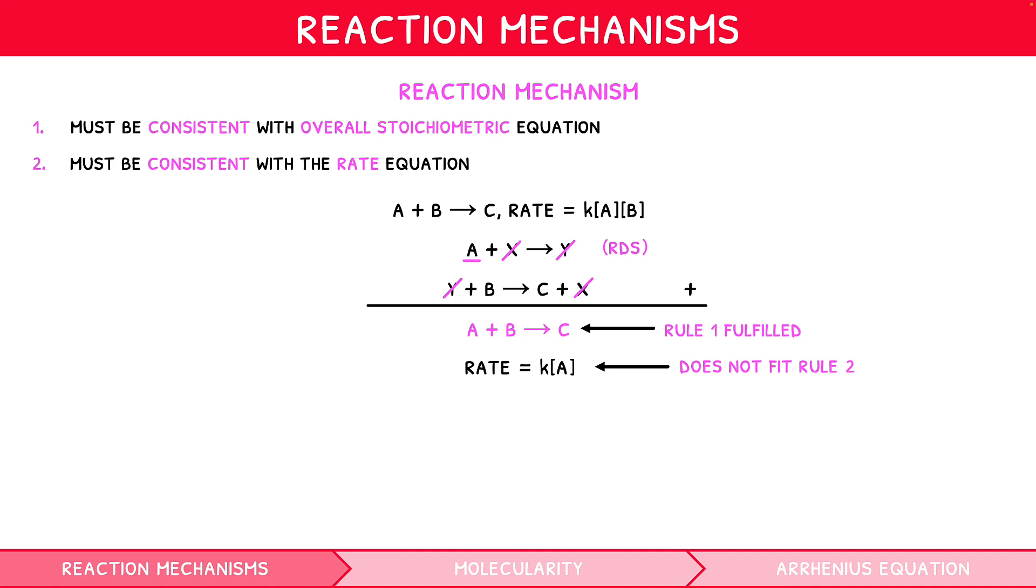However, a useful exam point is that the rate-determining step will have a rate equation equal to the overall rate equation. It is possible to propose several correct mechanisms for an overall reaction. In such situations, the principle of Ockham's razor should be applied. I.e., if multiple mechanisms exist, the simplest should be used if it explains the data fully.